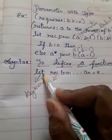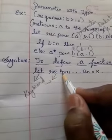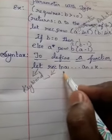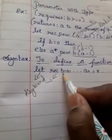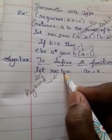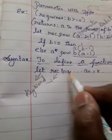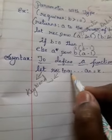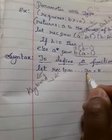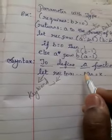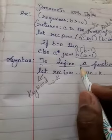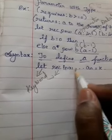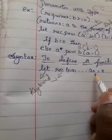'fn' is a variable indicating an identifier being used as a function name. The names a1 up to aN are variables indicating identifiers used as parameters. So a1 to aN are the parameters of the function.